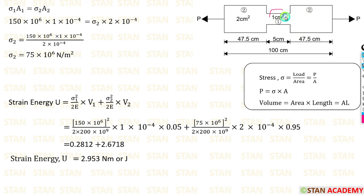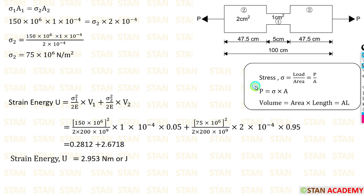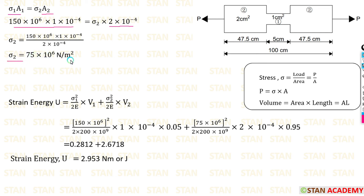Since we have two different sections, we split the formula: U equals sigma1 squared over 2E into V1, plus sigma2 squared over 2E into V2. We know sigma1 but not sigma2, so we need to find it. Since the same load P is applied to both sections, the load is equal in both. Using sigma equals P by A, we get load equals stress times area, so sigma1 into A1 equals sigma2 into A2. Substituting the known values, we get sigma2 equals 75 into 10 power 6 newton per meter square.